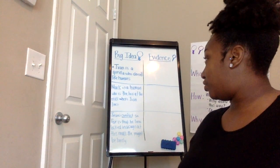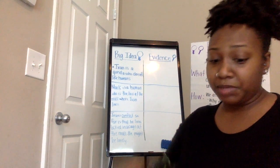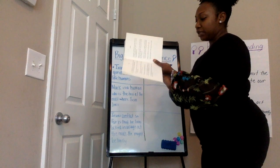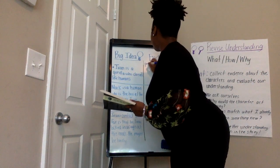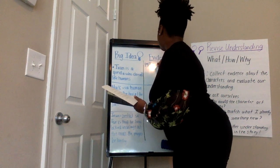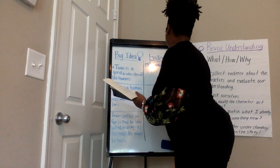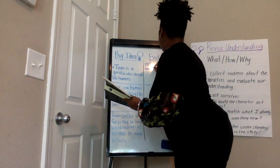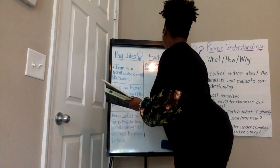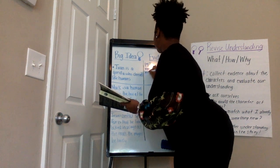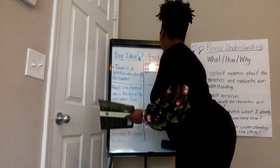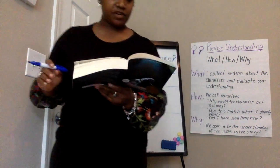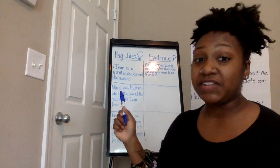The big idea says Ivan is a gorilla who doesn't like humans. Now I found my text evidence — I'm going to put it on page 2, where it says 'Humans waste words. They toss them like banana peels and leave them to rot.' I think Ivan is saying that humans just talk too much. Now I have my first piece of evidence that supports this big idea that Ivan does not like humans.